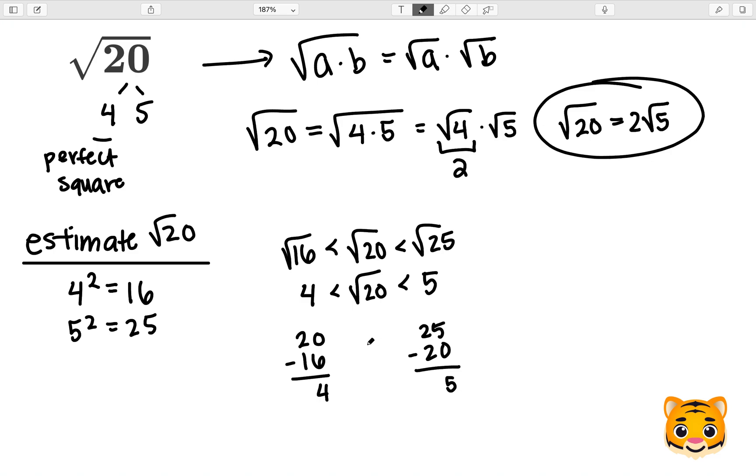Because 4 is less than 5, we can see that 4 is closer to the square root of 20 than 5 is. Therefore, we can estimate the square root of 20 as approximately 4.